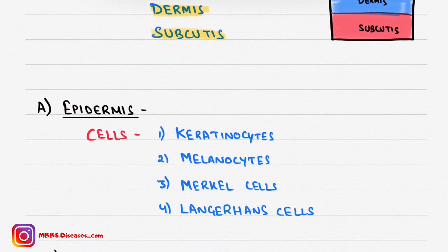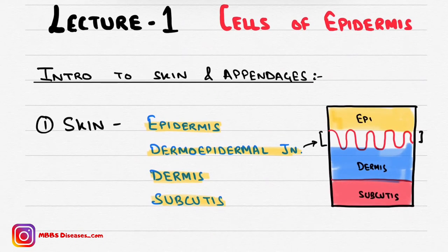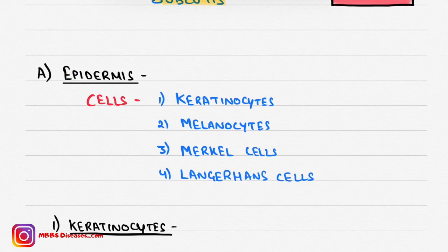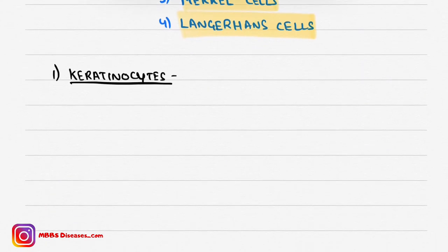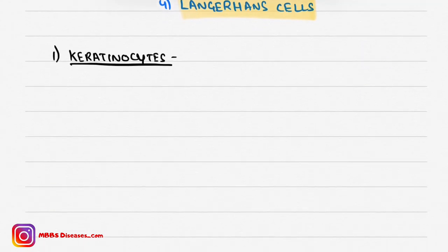Now coming to the epidermis. As the topic suggests — cells of epidermis — there are four cells: first is keratinocytes, second are melanocytes, third are Merkel cells, and fourth are Langerhans cells. The most important and most abundant cells of the epidermis are keratinocytes.